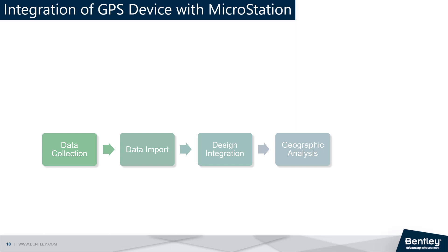Finally, a combination of data from the GPS device and the geographic analysis in MicroStation can be used to create detailed maps that accurately reflect real-world conditions. These maps can be used for various purposes such as navigation, resource management, and environmental planning.